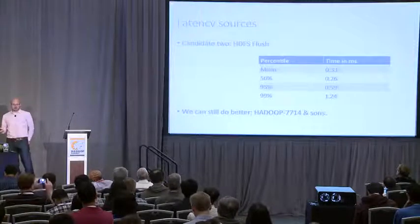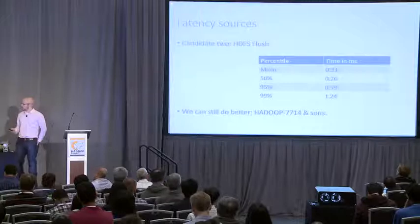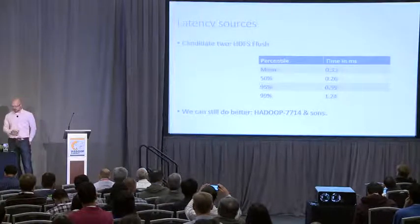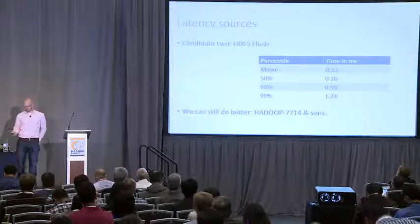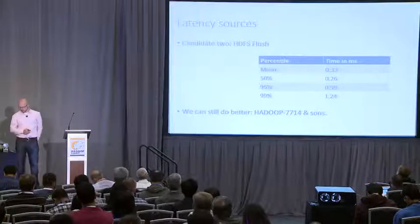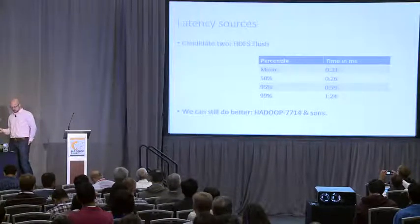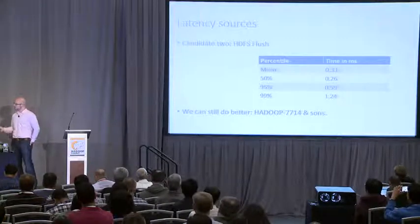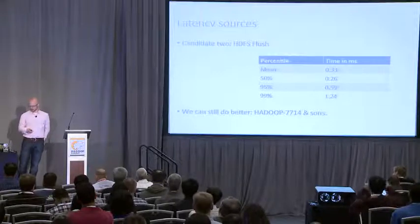The flush of the WAL to HDFS looks potentially scary, so what does that actually look like? On the same cluster, looking at just the flush in isolation, at the 50th percentile we see a quarter of a millisecond — not too bad. And here again the 99th percentile is on the order of 5x the mean. Overall this is pretty acceptable in our millisecond kind of world, and this is on HDFS 2.4.